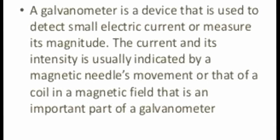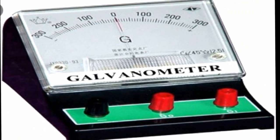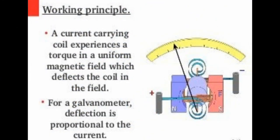The current and its intensity is usually indicated by a magnetic needle's movement, or that of a coil in a magnetic field — that is an important part of the galvanometer. Now you can see the picture of the galvanometer. Its working principle is: a current-carrying coil experiences a torque in a uniform magnetic field, which deflects the coil in the field. For a galvanometer, deflection is proportional to the current.